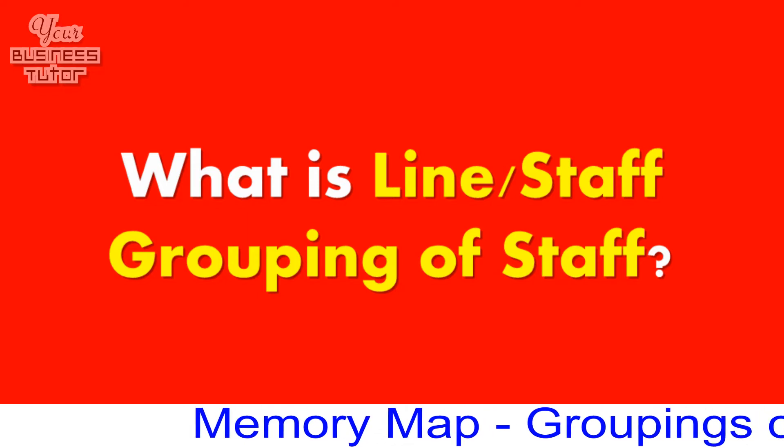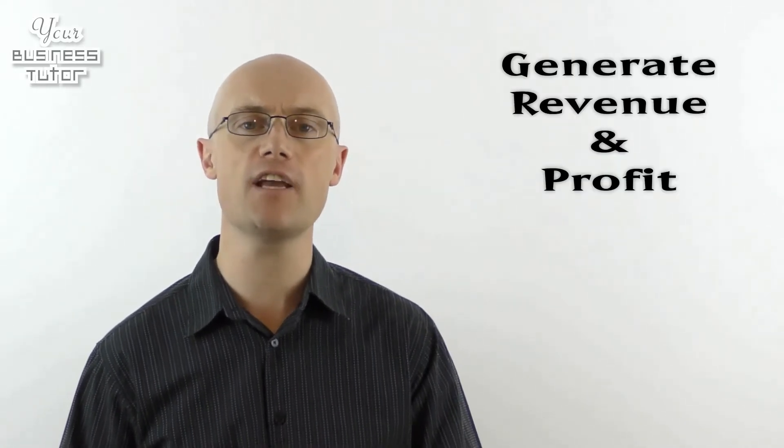So let's begin by finding out what line staff grouping of staff is. Line staff grouping is when an organisation allocates its employees to line departments which provide core activities and staff departments which provide support functions. What this means is that line departments make or sell the product the business provides and therefore generate the revenue and profit that the business earns from customers. Staff departments, on the other hand, provide a support function to the line departments so that they run more smoothly and efficiently.